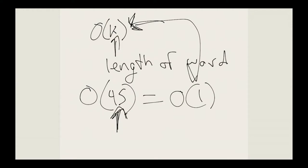But here we'd probably accept both O(1) and O(k). In any case, explain either that O(1) means you have an upper-bounded length of word, or O(k) where k means the length of the word.